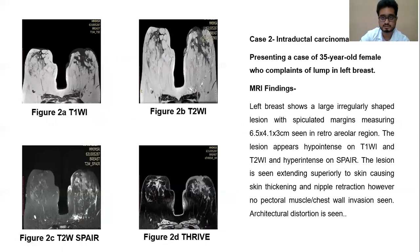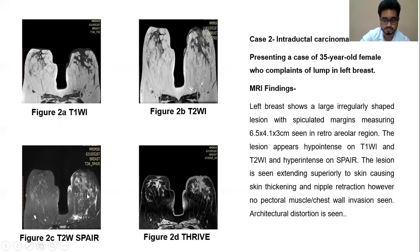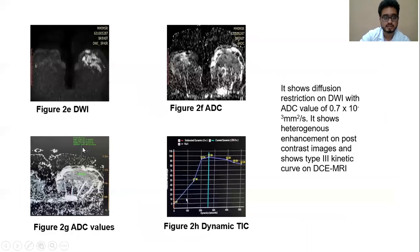The second case is an intraductal carcinoma in a 35-year-old female who complained of a lump in the left breast. There is a large irregularly shaped lesion with spiculated margins in the left areolar region, which appears hyper-intense on T1 and T2 images and hyper-intense on STIR. The lesion extends superiorly to the skin causing skin thickening and nipple retraction. However, no gross invasion of the pectoral muscles or chest wall was seen. It restricted on diffusion-weighted images and showed a type 3 dynamic time intensity curve.